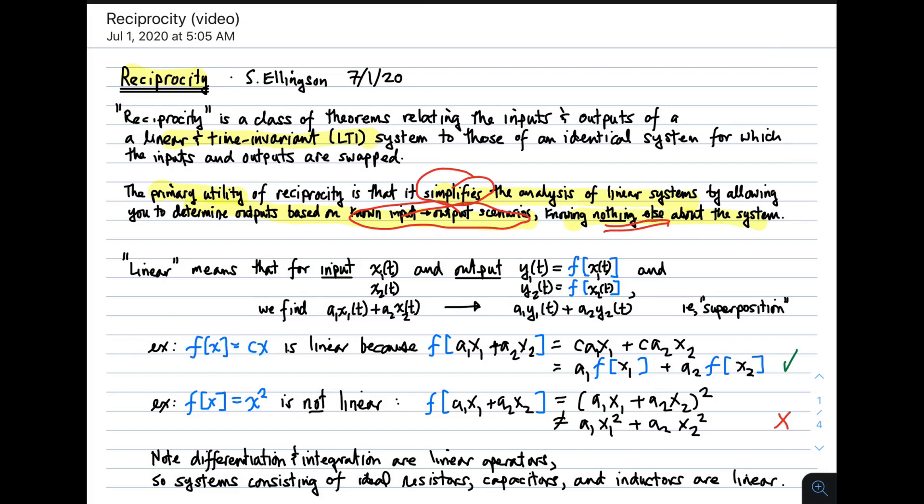Now an important preliminary requirement is that the system be linear, and linear means linear in the conventional signal processing sense, referring primarily to the superposition property of a linear time-invariant system. If you have an input and an associated output, and then you check another input and its output, then you can find outputs for linear combinations of the inputs because they're simply linear combinations of the outputs. So a system that is a function like input multiplied by a constant is linear because it obeys superposition, but a system in which the input is squared is not linear because that will not satisfy superposition.